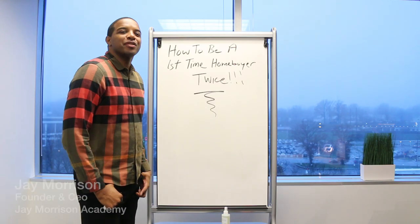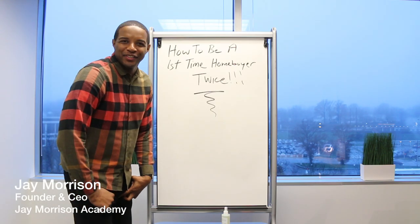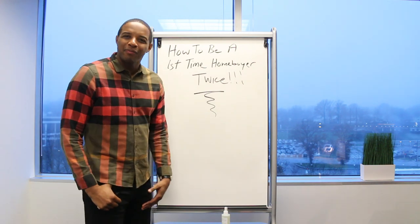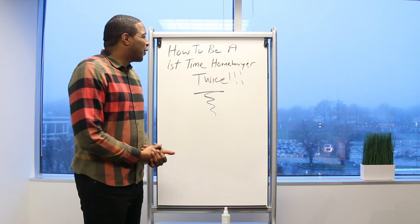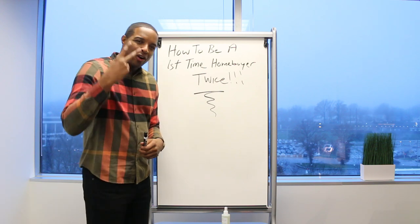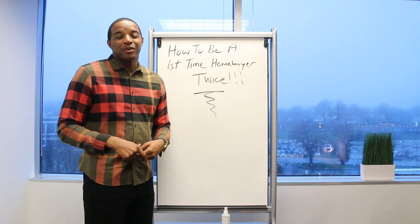What's up family, peace kings and queens, investors and almost investors, inspiring investors, Jim Morrison Academy students, wealth builders. I came with this cool title: how to be a first-time homebuyer twice, two times or three times or four times.